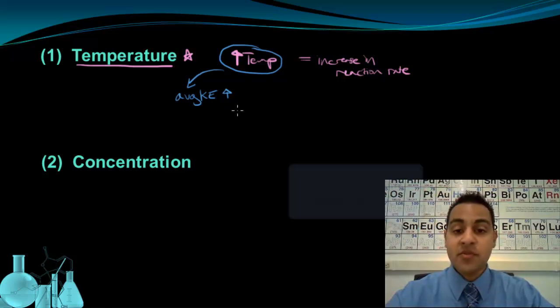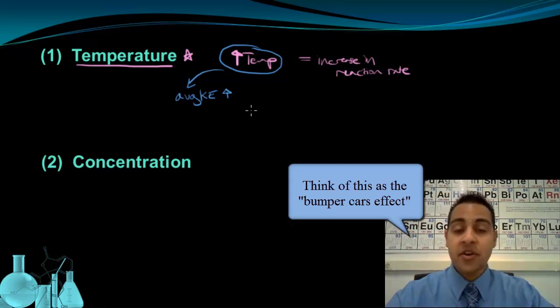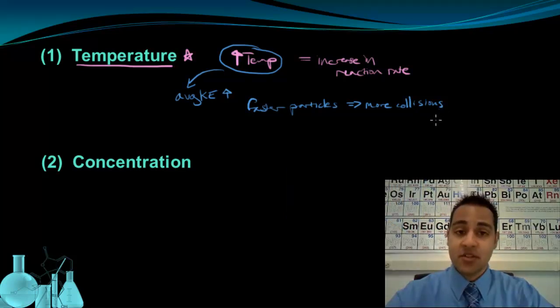The first is that if particles are moving faster in a given area, you're going to have more overall collisions. And if you have more collisions overall, you have an increased chance in seeing an effective or successful collision.